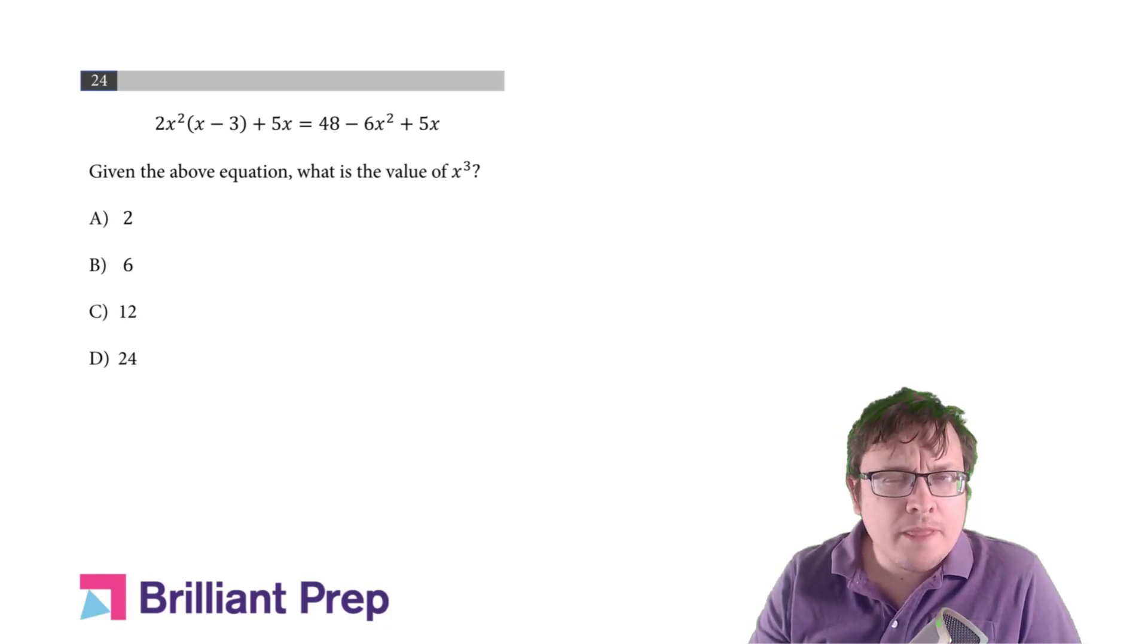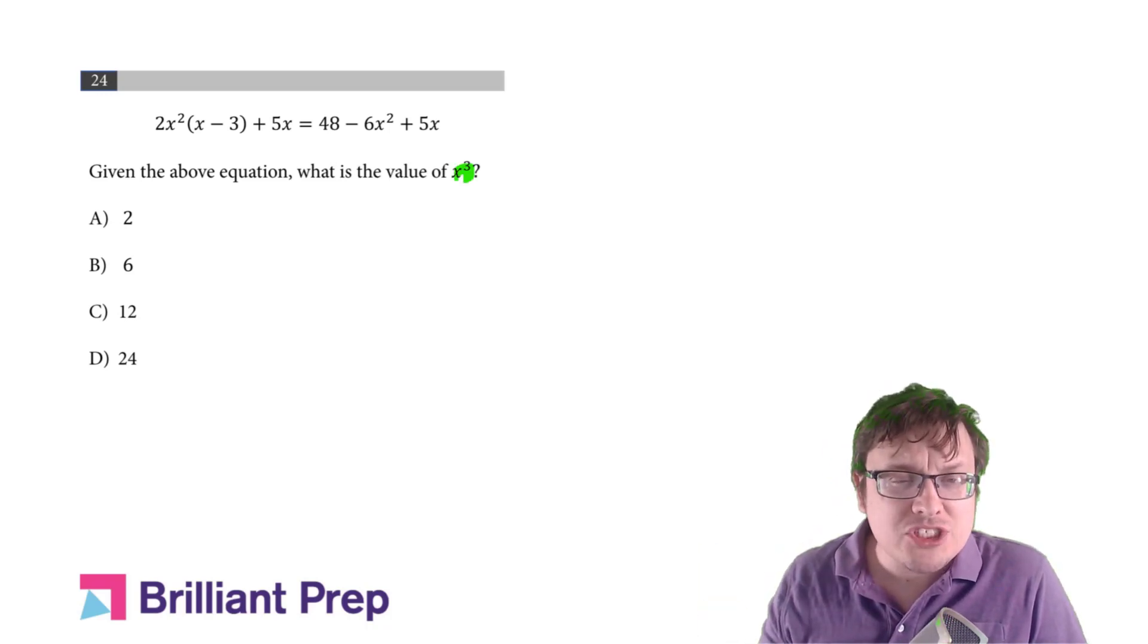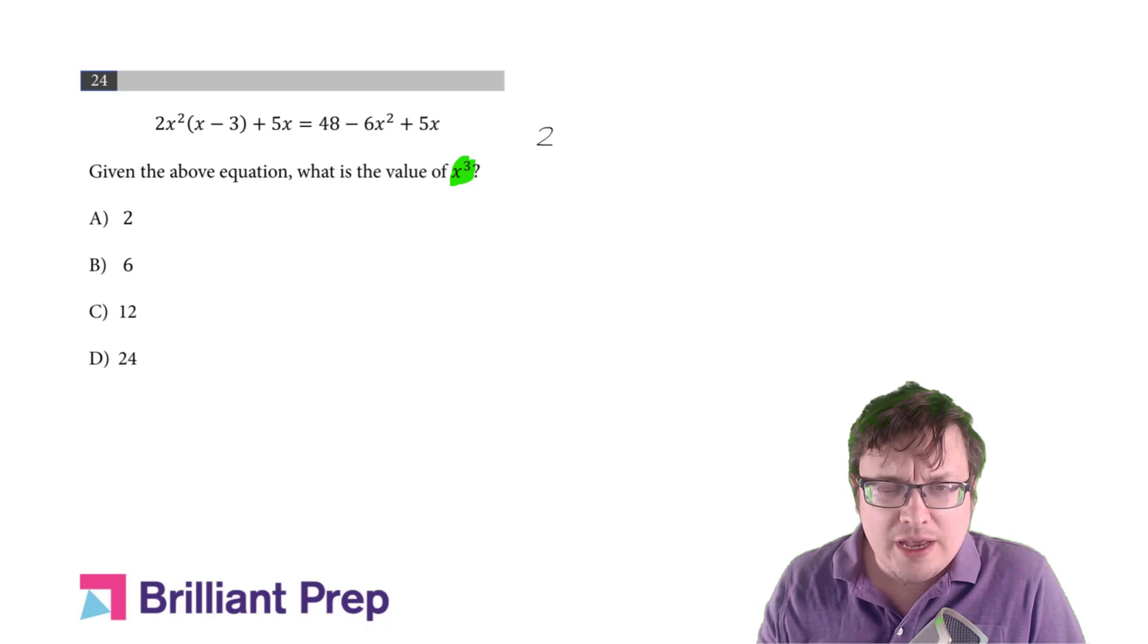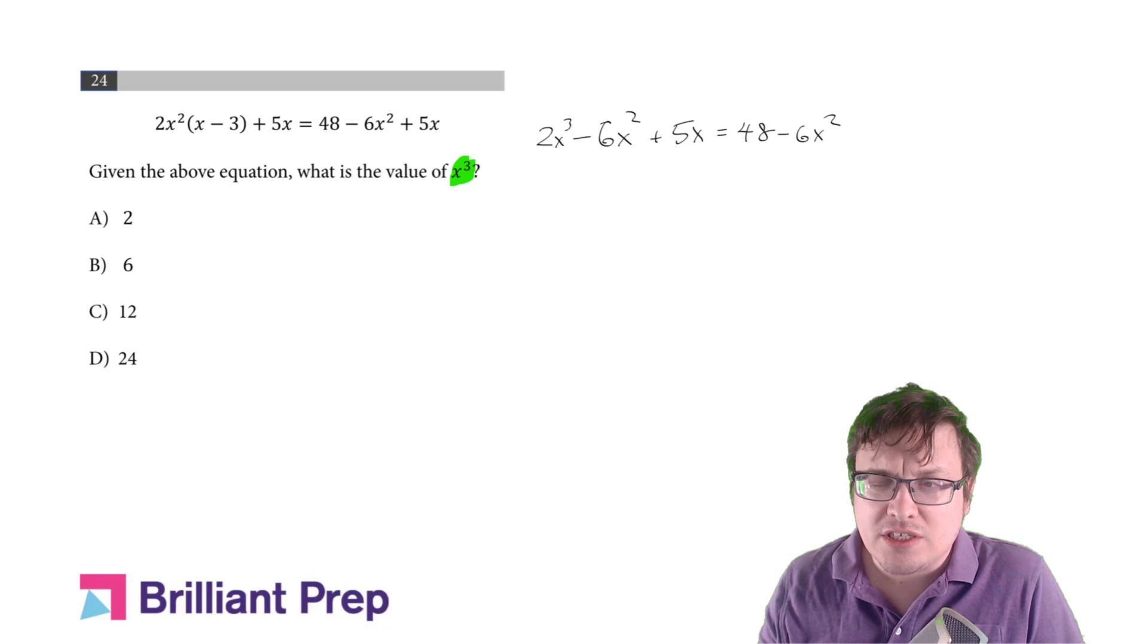Here, again, you might be tempted to solve for x, and then when you find x cube it to get the answer, but can we not perhaps just solve for x cubed? Can we do that? Let's see. Let's combine like terms. Let's simplify this. So let's go ahead and foil this out or expand this out. So we get 2x cubed minus 6x squared plus 5x equals 48 minus 6x squared plus 5x.